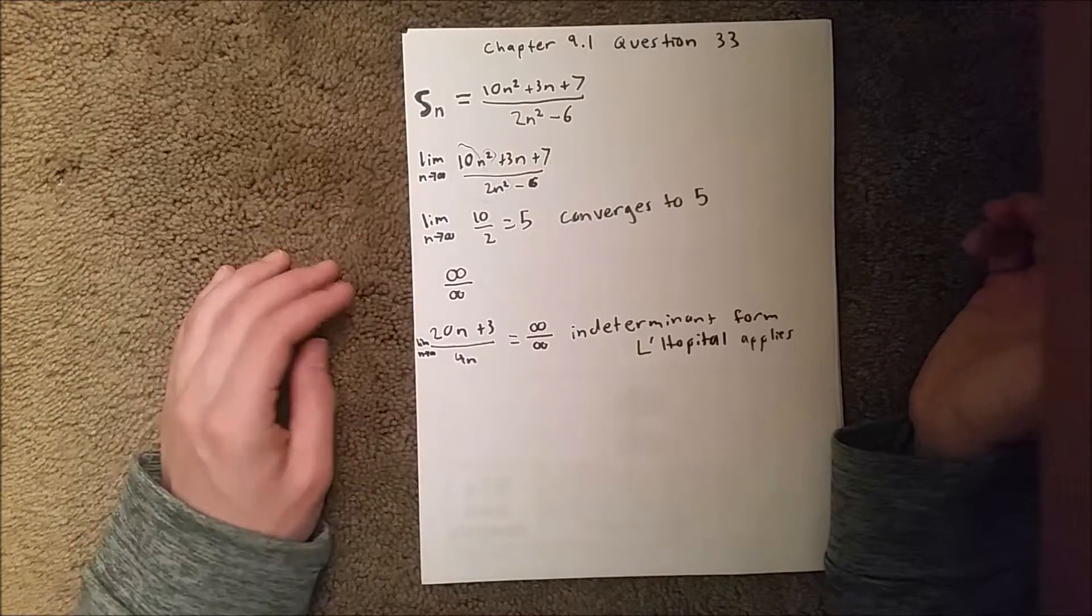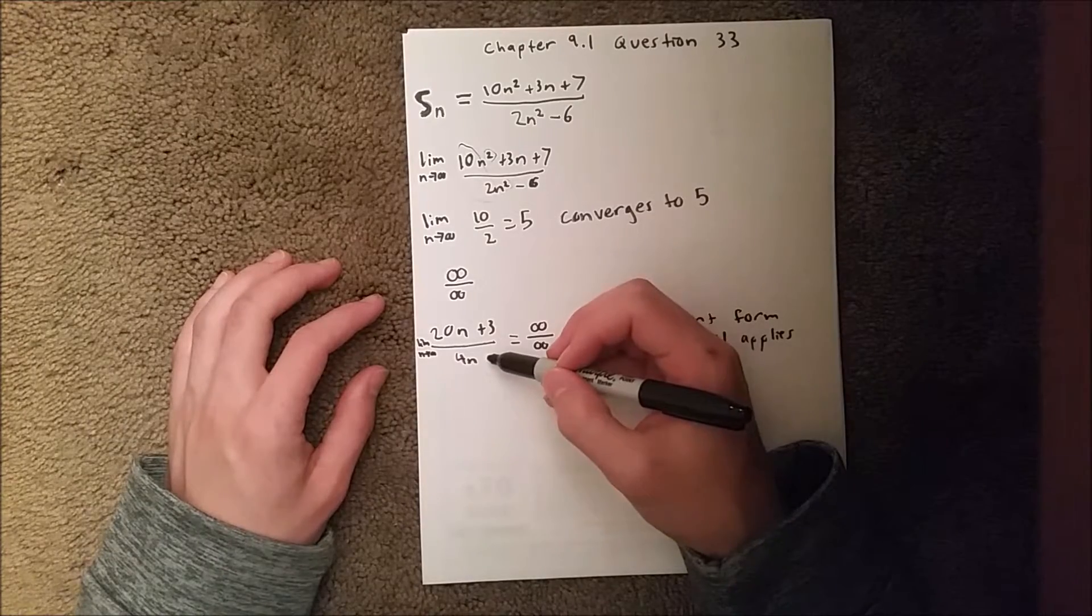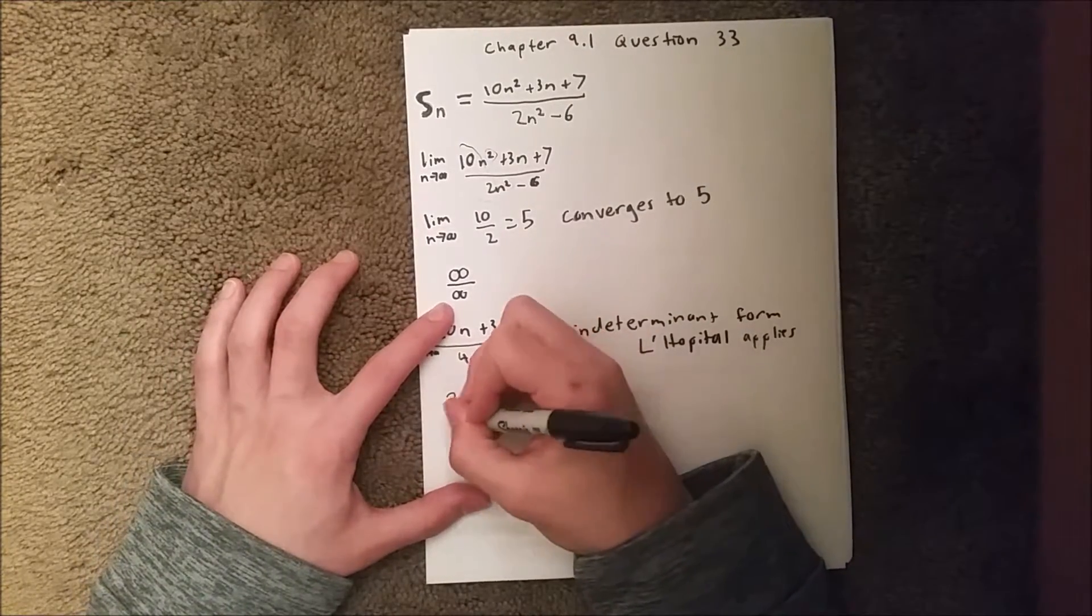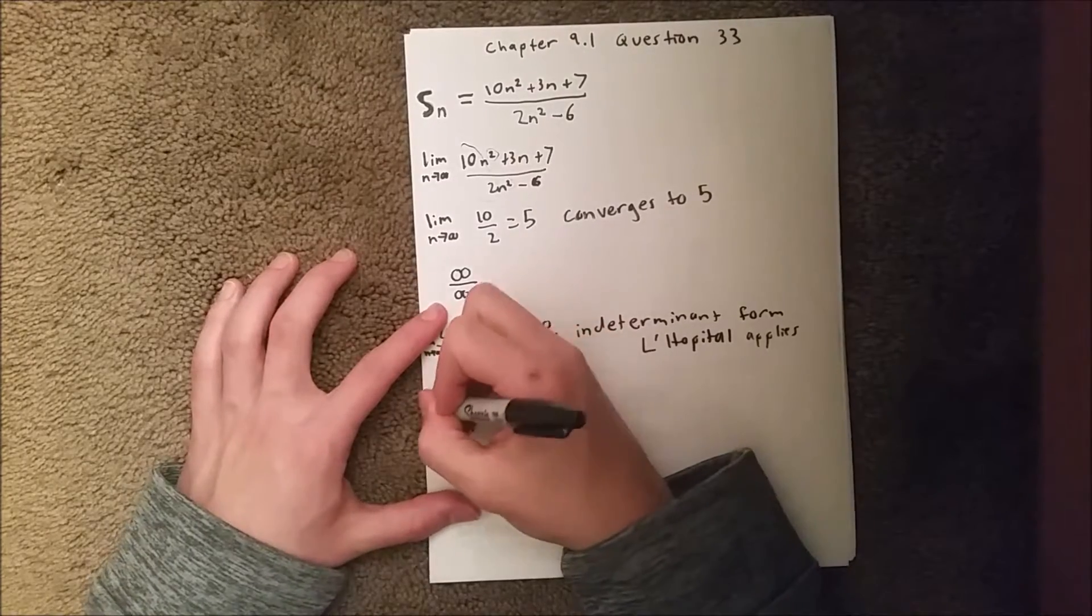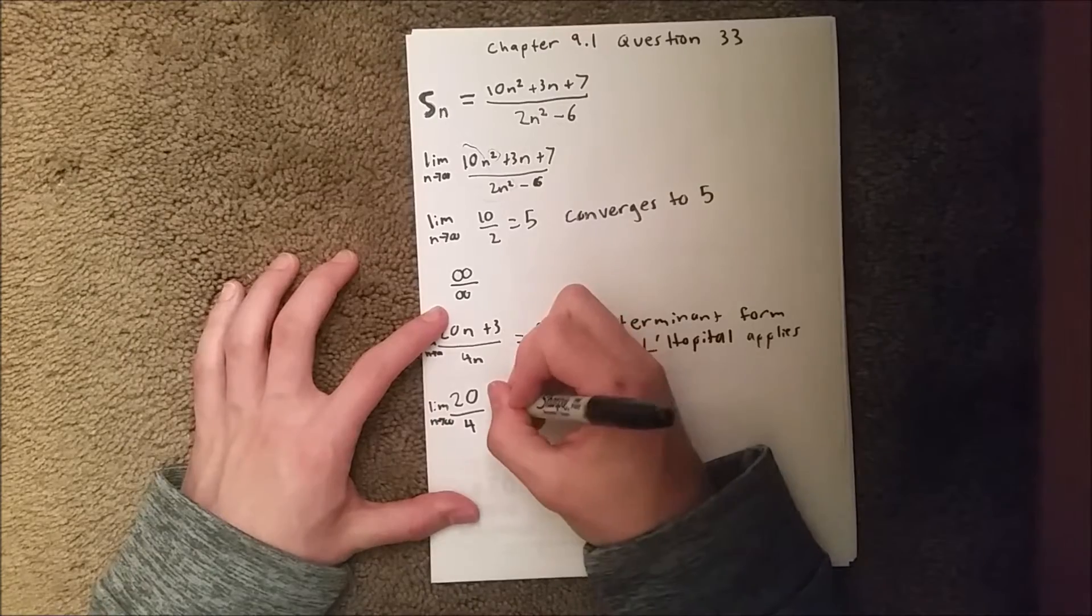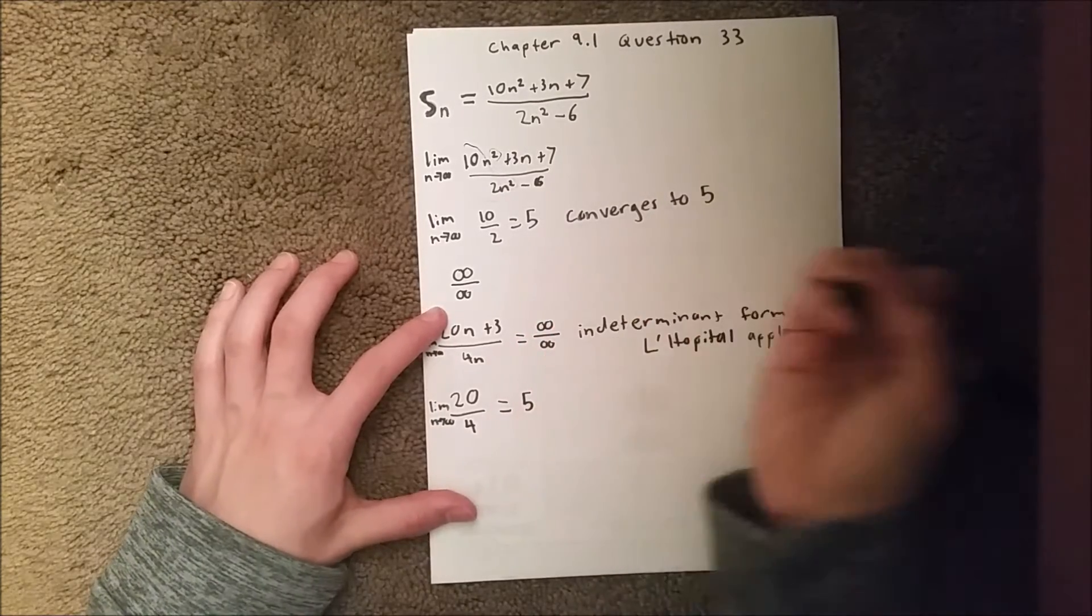So again you're going to take the derivative of the top and derivative of the bottom which in this case will be 20 over 4, and when you take the limit as n goes to infinity of that, that will equal 5, which is the same thing we got earlier.